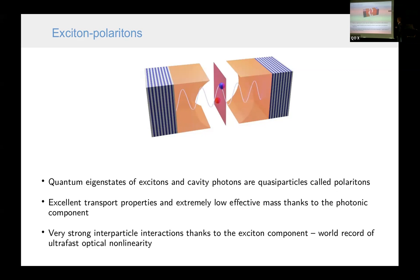And the answer is that there is such a particle, exciton polariton, which kind of has both these good properties. Exciton polaritons are excitations in micro-cavities. These are semiconductor heterostructures, where between two very high reflectivity mirrors, there is very high quality mode, photonic mode, which is strongly coupled to excitons, excitation of electrons and holes in a semiconductor. And these particles have, at the same time, excellent transport properties and extremely low effective mass, thanks to this photonic part, and very strong inter-particle interactions, thanks to this excitonic component. And in fact, this is a world record of ultra-fast optical nonlinearity.